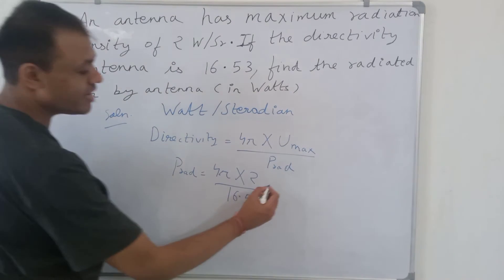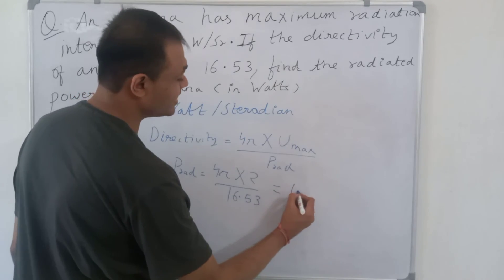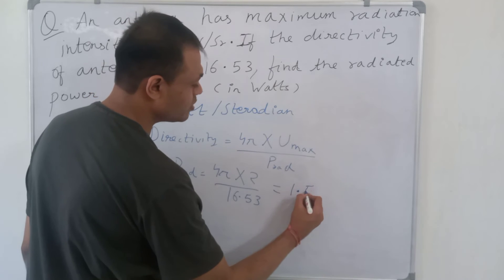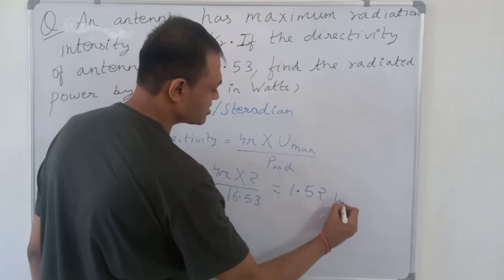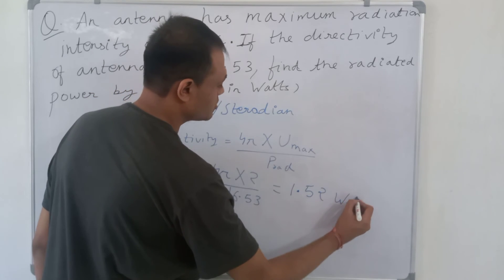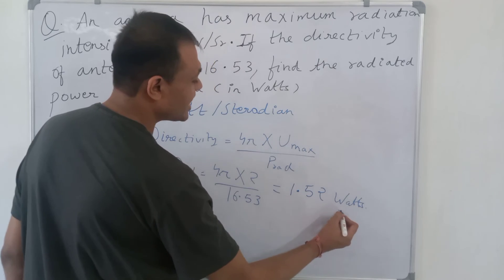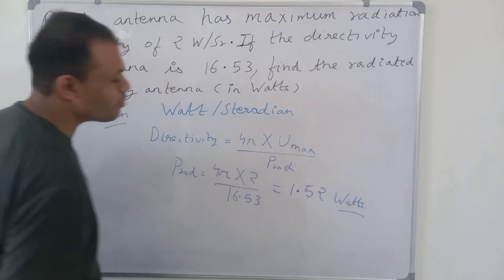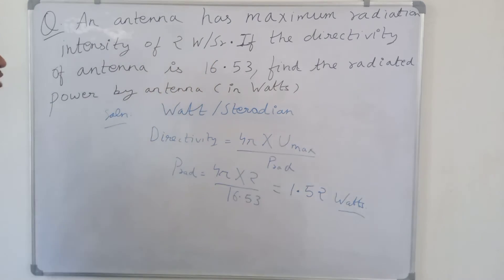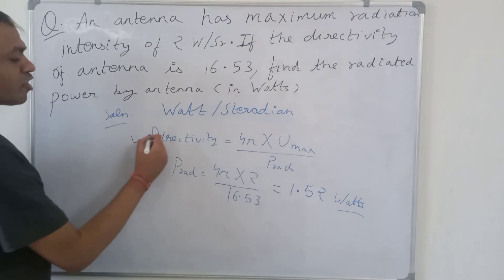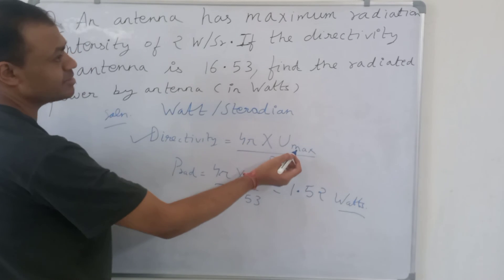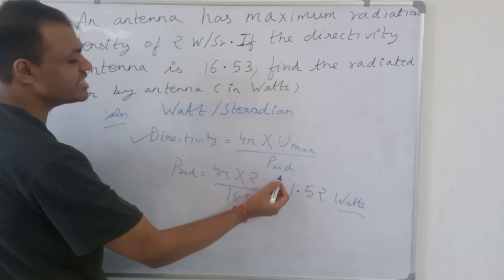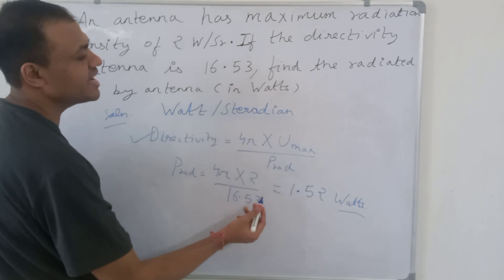If you solve it using a calculator, this will be equal to 1.52 watts. So the power radiated by the antenna is 1.52 watts.